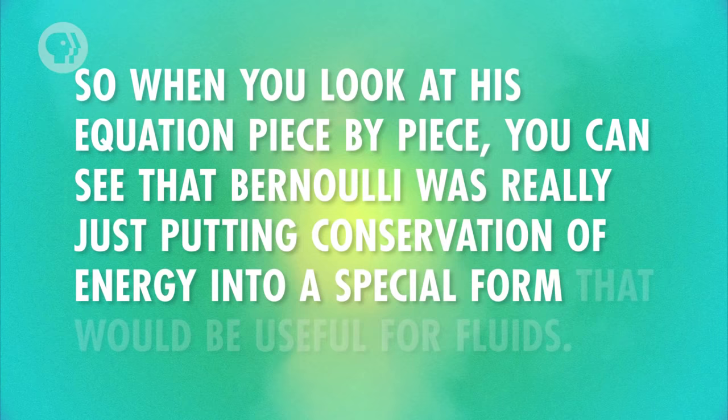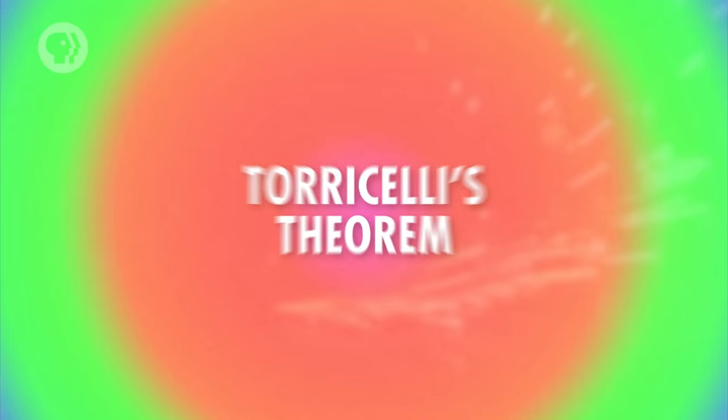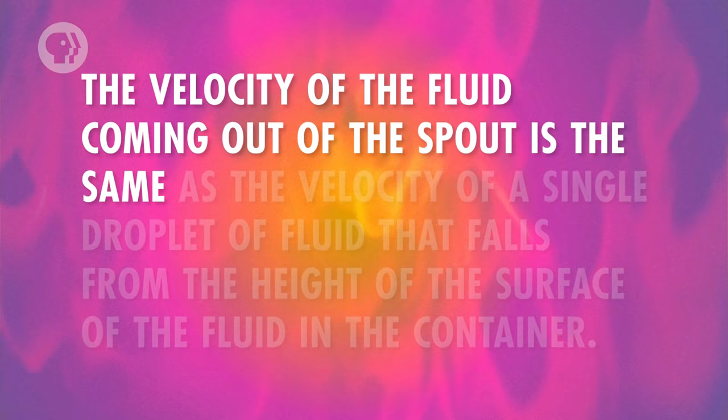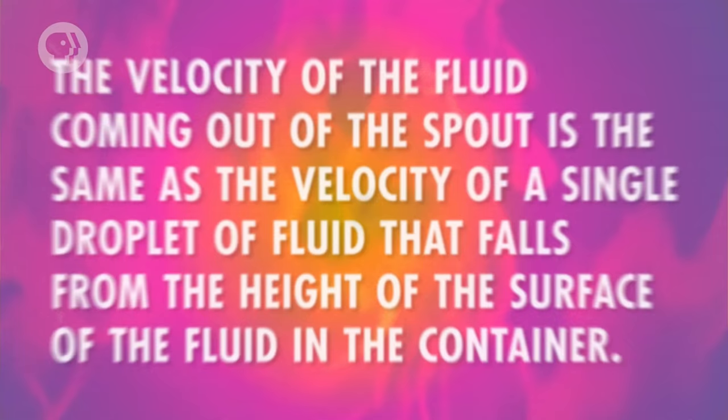Now let's look at a special case of Bernoulli's equation known as Torricelli's theorem. Torricelli's theorem uses conservation of energy to find the velocity of fluid flowing from a small spout in a container. It states that the velocity of fluid coming out of the spout is the same as the velocity of a single droplet of fluid that falls from the height of the surface of the fluid in the container — in other words, the pressure pushing fluid out of the spout gives it the same velocity gravity would.